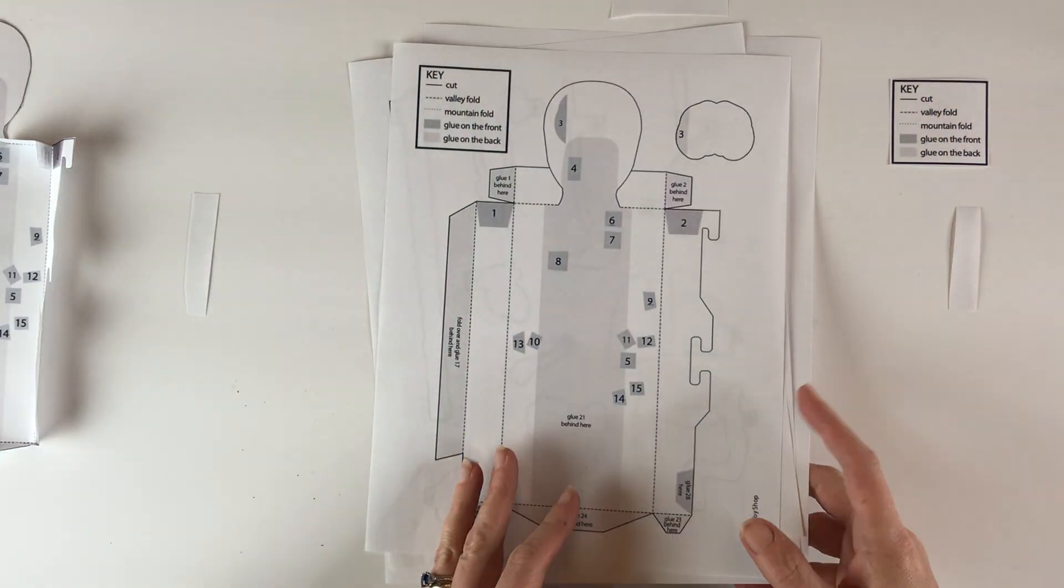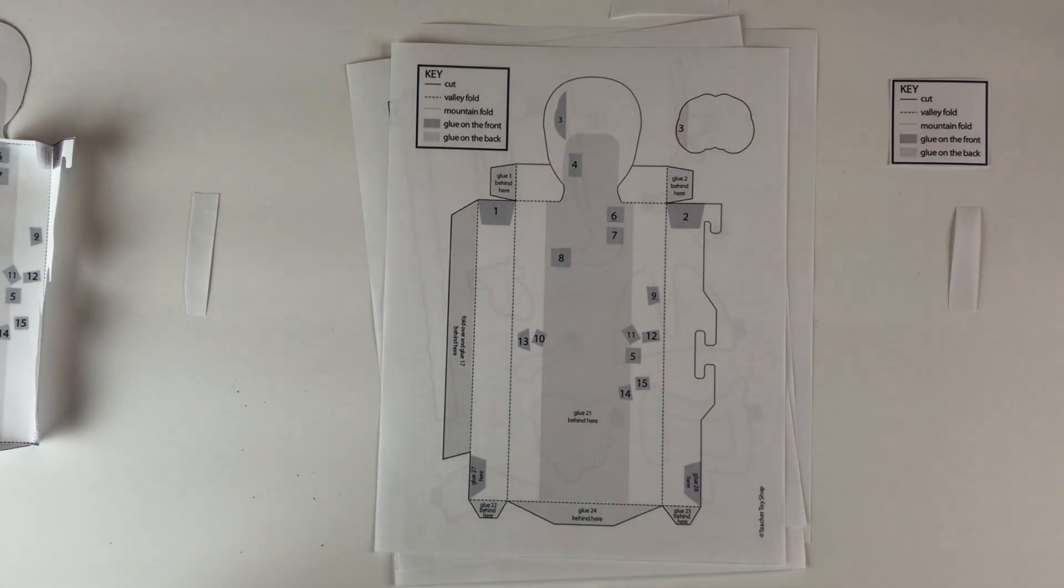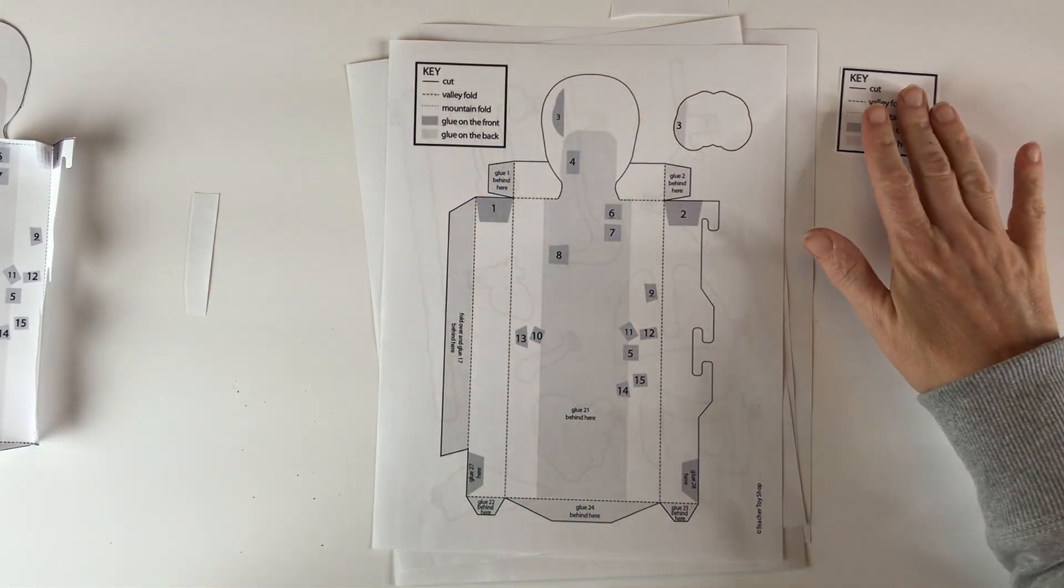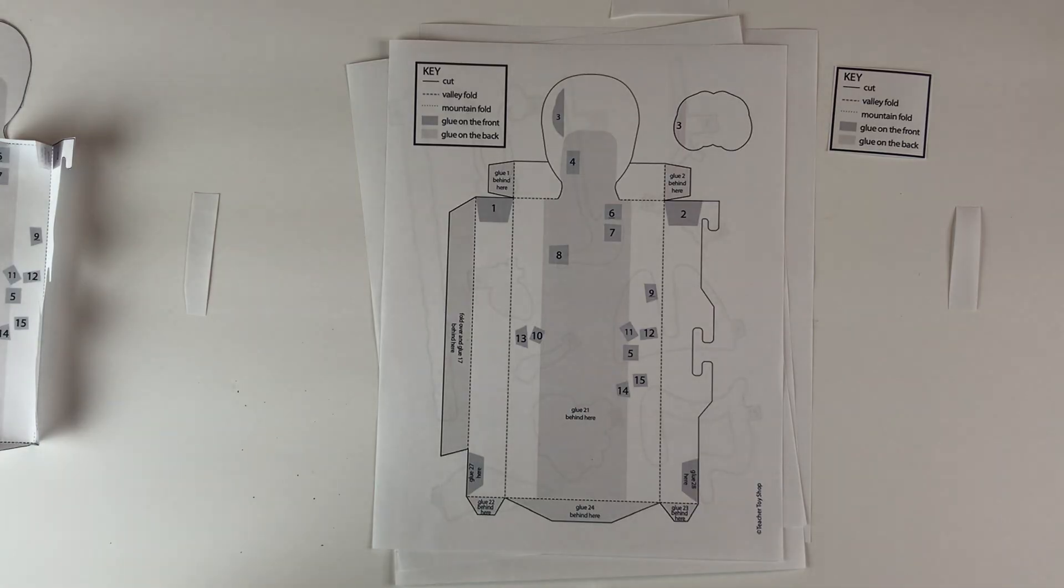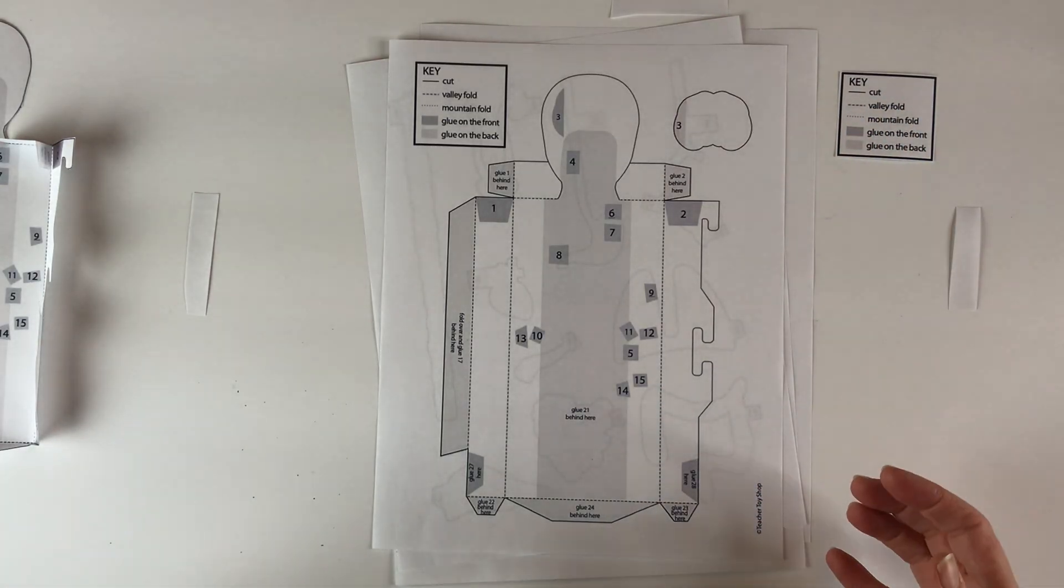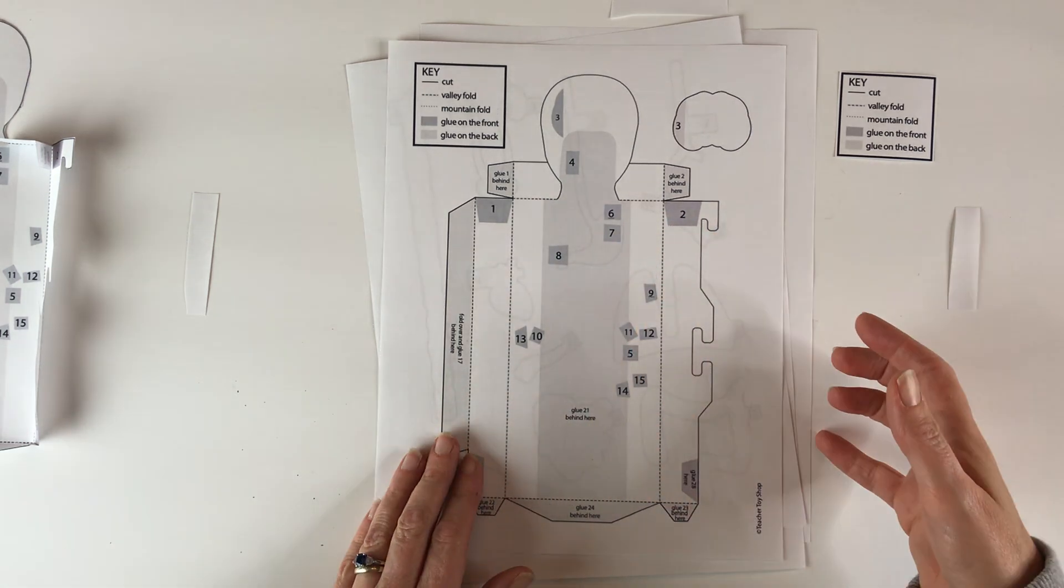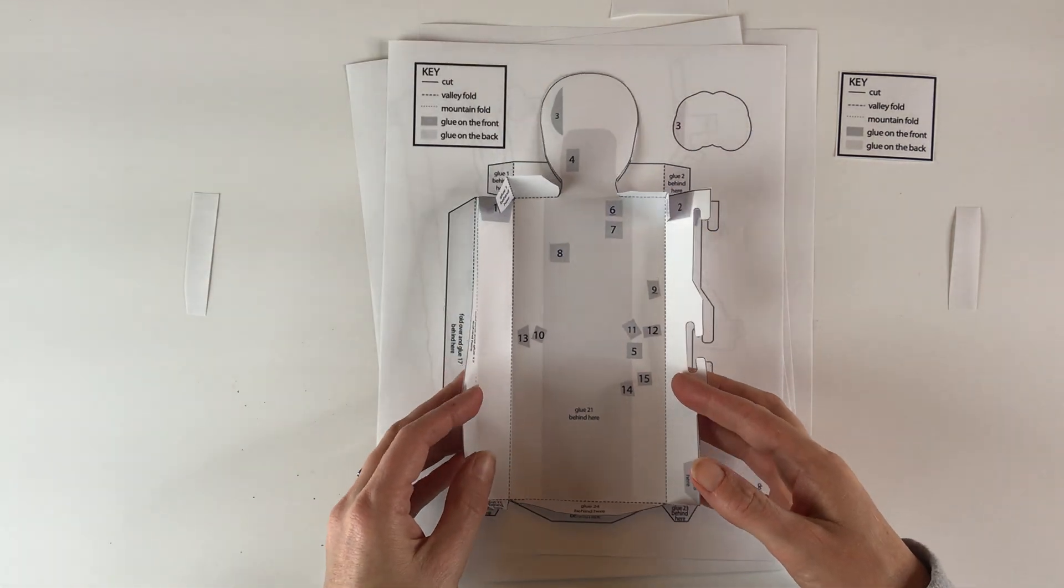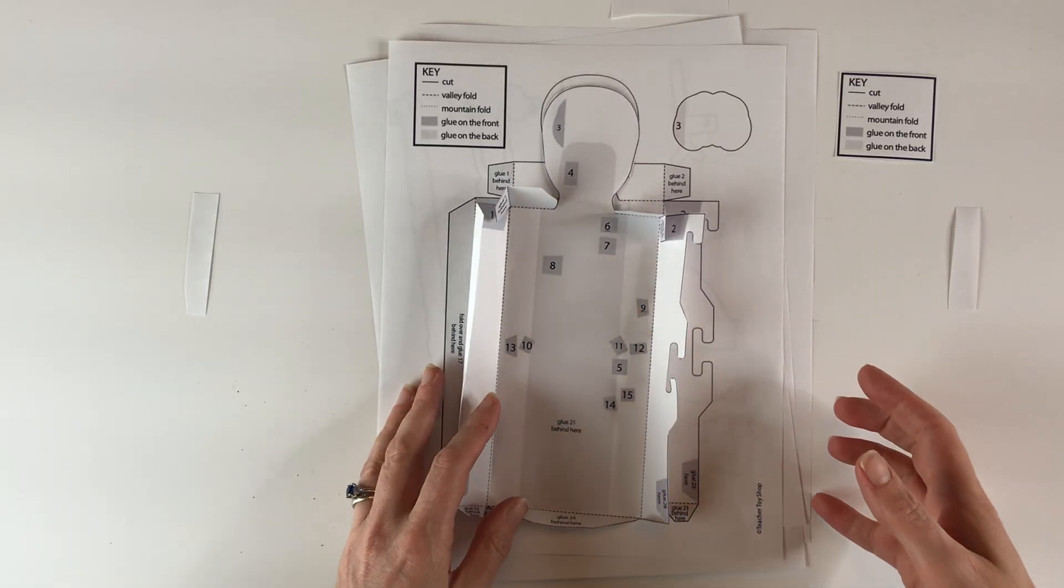And what you want to do is cut out the template and follow the key. I usually put the key to the side so that I can consult it as I go. Okay, so I have this first page already cut out and folded per the instructions.